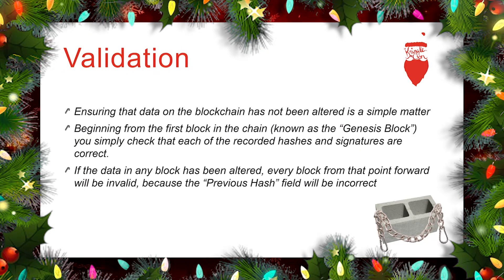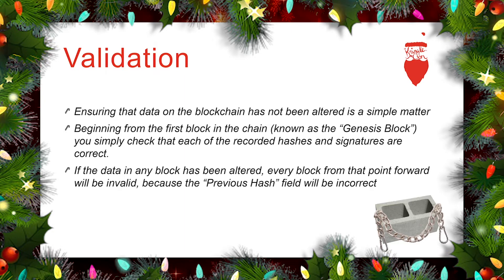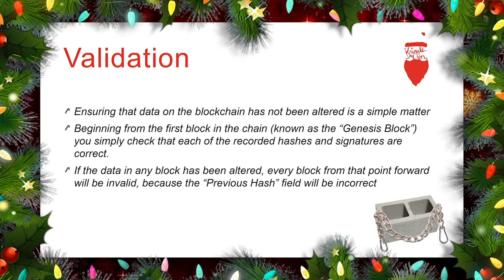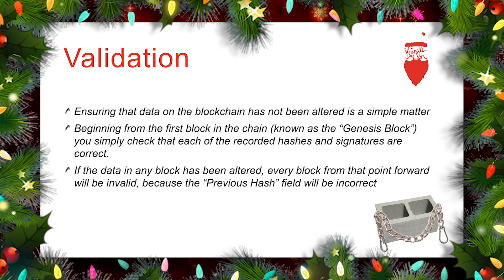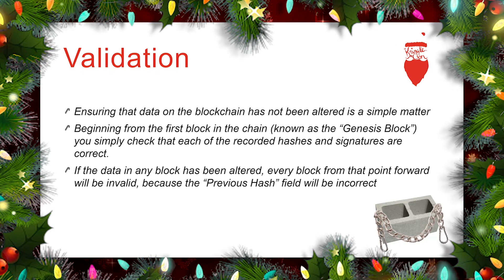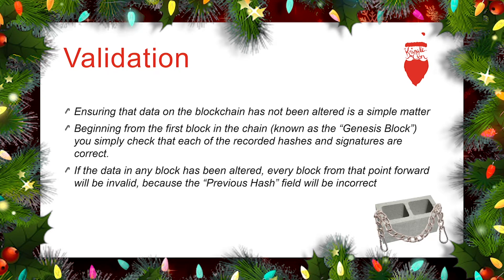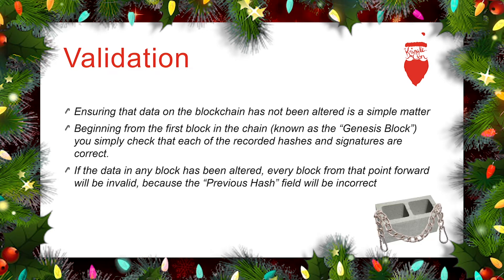How do we validate that the blockchain has not been altered? It's actually very simple. To ensure the data on the blockchain has not been altered, we begin at the first block, known as the Genesis block. It is assumed to be valid simply by being defined as the Genesis block. From there, we begin by checking the hashes of the block and the digital signatures of the block, and we check to make sure that the hash matches the previous block hash of the following block. If at any time any of those are incorrect, all of the following blocks will be incorrect as well, and we know that we've found an invalid block on the blockchain.